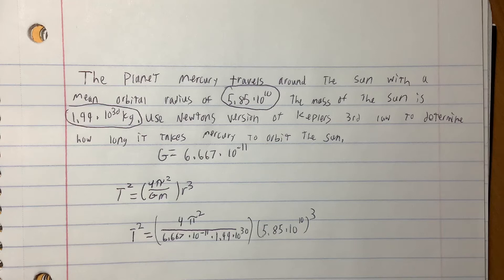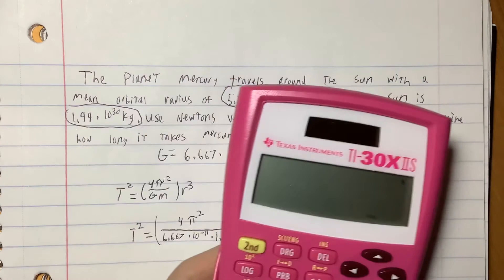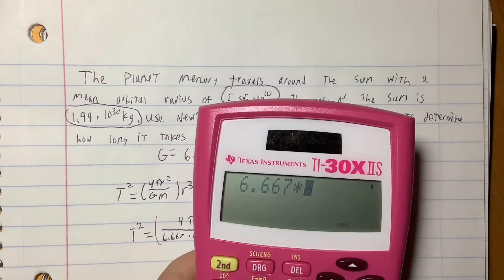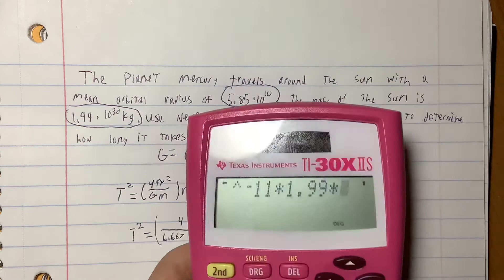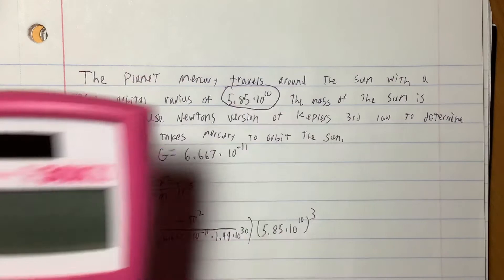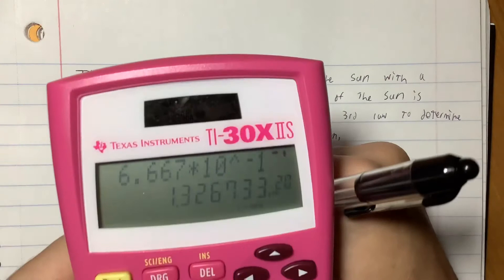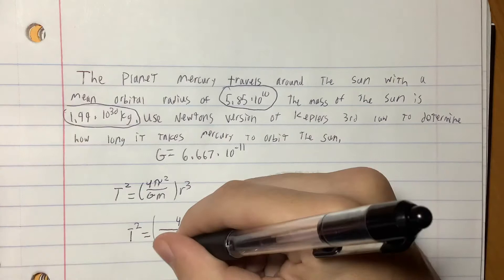We can solve this using our calculator. First we'll put in 6.667 times 10 to the negative 11th times 1.99 times 10 to the 30th. That'll give us an answer of 1.326733 times 10 to the 20th.